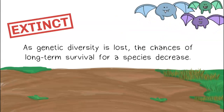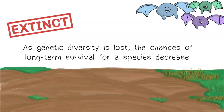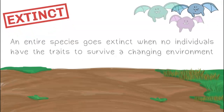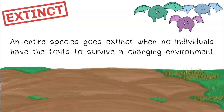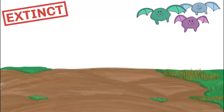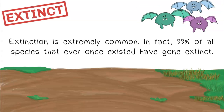As genetic diversity is lost, the chances of long-term survival for a species decreases. An entire species goes extinct when no individuals have the traits to survive a changing environment. Extinction is extremely common. In fact, 99% of all species that ever once existed have gone extinct.